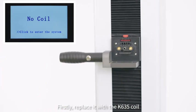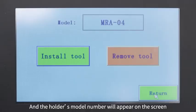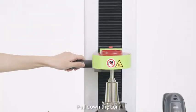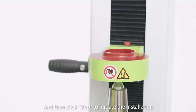Firstly, replace it with the K635 coil. Directly scan the QR code and the holder's model number will appear on the screen. Pull down the coil, align with the orange line inside the coil and click start to initiate the installation.